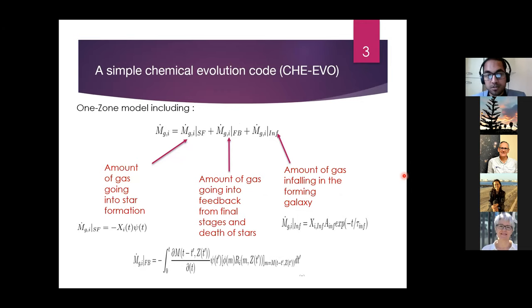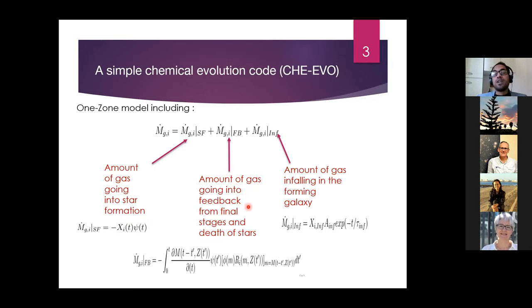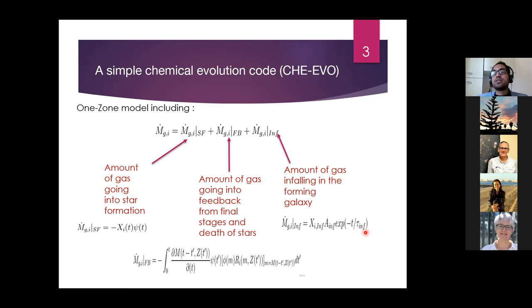We use a very simple chemical evolution code with three terms. The first term on the right is the amount of gas going into star formation, where ψ(t) is the star formation rate and X_i is the mass fraction. The second term deals with stellar yields — the amount of gas fed back when stars die. The R_i term deals with the stellar yields, which we will discuss in future slides. The last term is the amount of gas infalling into the forming galaxy, considered as an exponential law where τ_inf is the infall timescale — an important parameter we will discuss extensively.